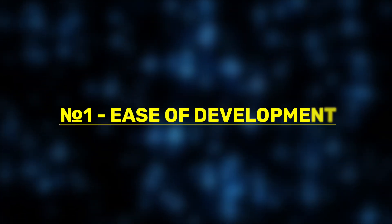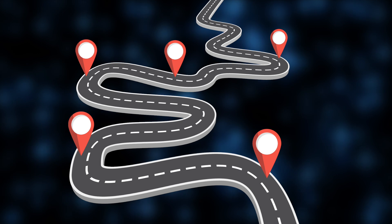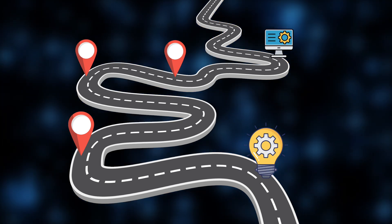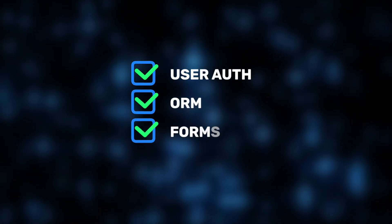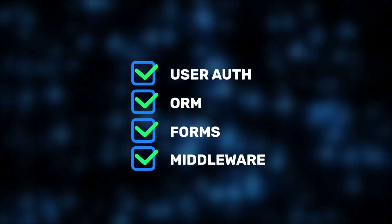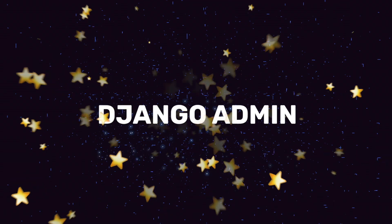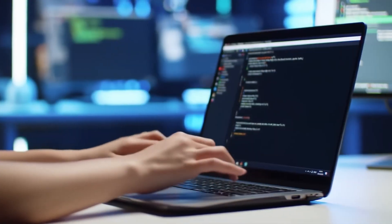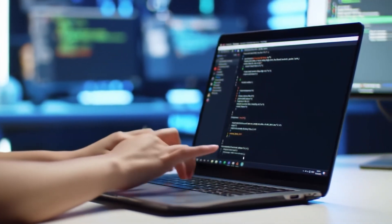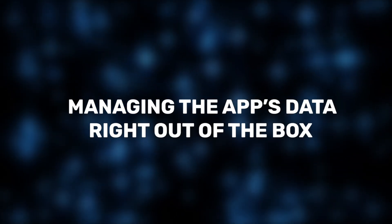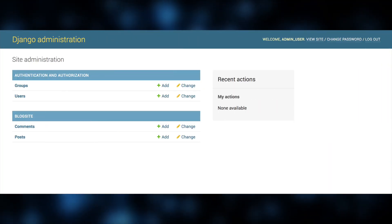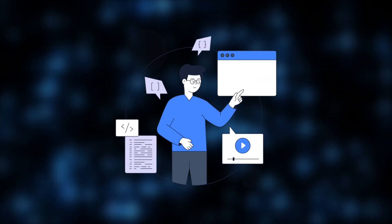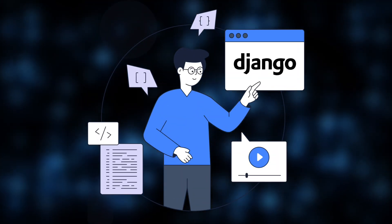We kicked off with ease of development — how quickly can you go from an idea to a running app? Team A, using Django, hit the ground running. UserAuth, ORM, Forms, Middleware — all there. But the real game changer is Django Admin. This built-in admin interface is often considered a killer feature. It lets you manage your app's data right out of the box, saving countless hours. For many companies, Django Admin is a key reason to pick Django over other frameworks.